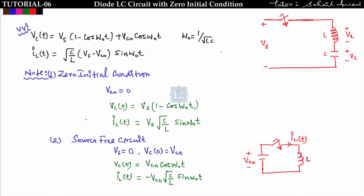In the previous lecture, we saw the response of an LC circuit with DC excitation. We got the following voltage and current: vc(t) = Vs(1 - cos(ω₀t)) + Vc₀·cos(ω₀t), where ω₀ = 1/√(LC), and iL(t) = √(C/L)·(Vs - Vc₀)·sin(ω₀t), where Vc₀ is the initial voltage across the capacitor.